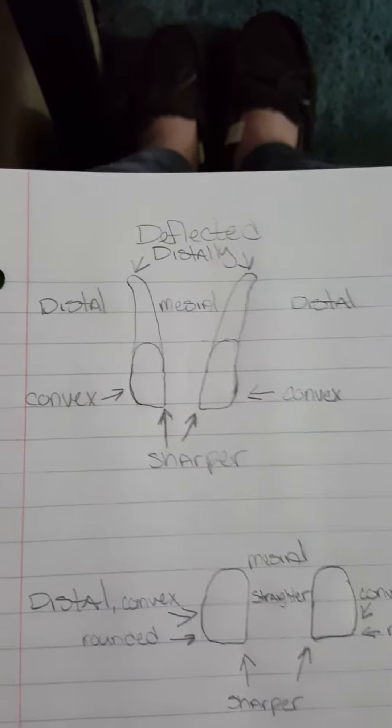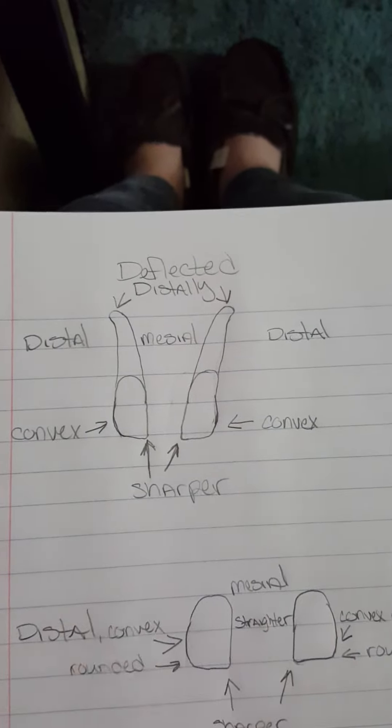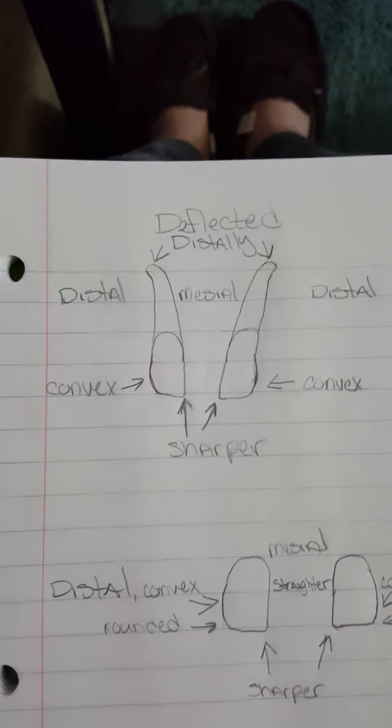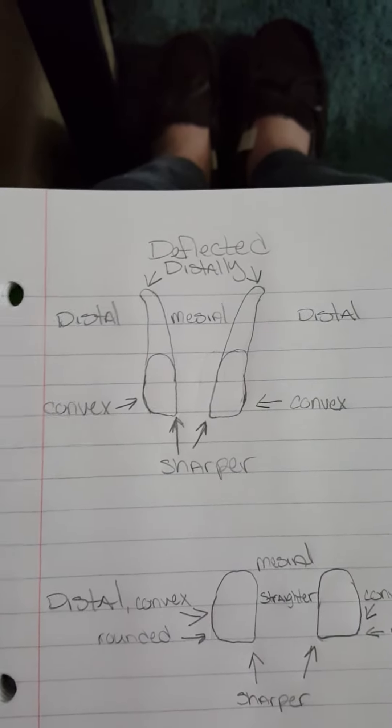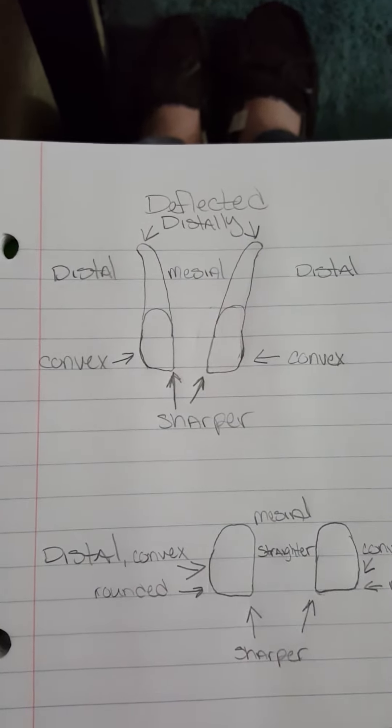Also the roots deflect distally. So if they were switched around, you'd be able to tell that they were in the wrong position because the roots would be deflected towards the mesial side and that would be a dead giveaway on that one.